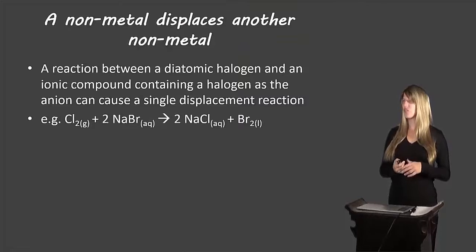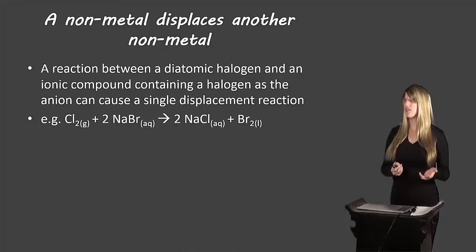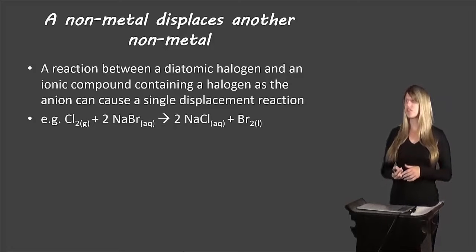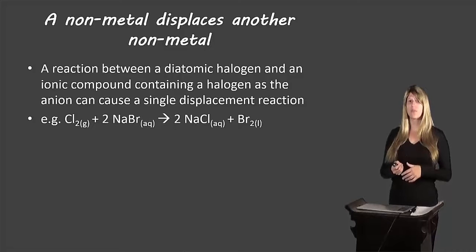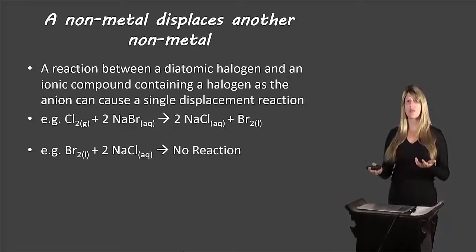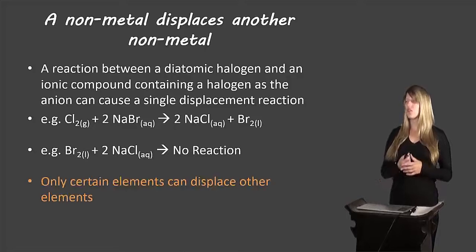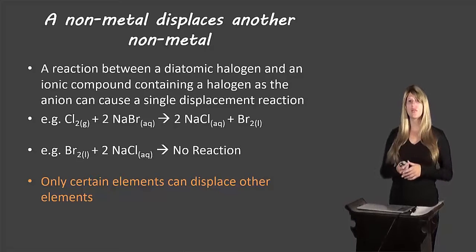The final type of reaction is when a non-metal displaces another non-metal. A reaction between a diatomic halogen and an ionic compound containing a halogen as the anion can cause a single displacement reaction. For example, chlorine displaces bromine in sodium bromide to produce sodium chloride and bromine. If we tried the reverse — diatomic bromine reacting with sodium chloride — there will be no reaction. The halogens have a reactivity series we can use to determine which elements will replace others.